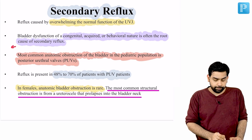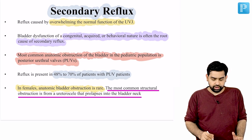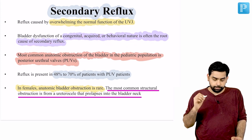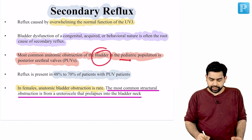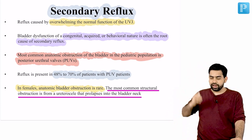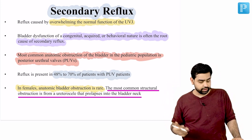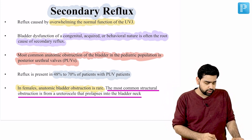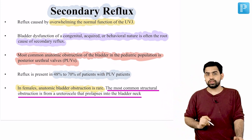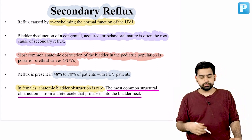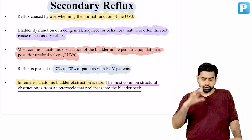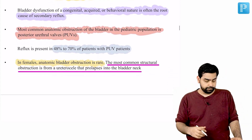Bladder dysfunction of congenital, acquired, or behavioral nature is often the root cause of secondary reflux. The most common anatomical obstruction of the bladder in the pediatric population is posterior urethral valve. If a patient has posterior urethral valve, reflux is present in close to 48 to 70 percent of those patients — an important statistic to remember. Around 50 to 70 percent of patients with posterior urethral valve may have VUR.